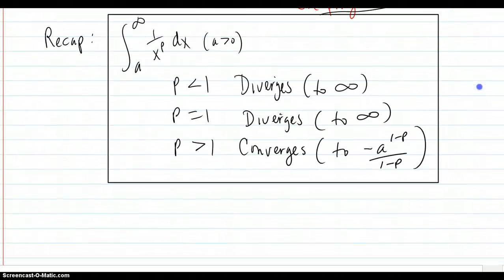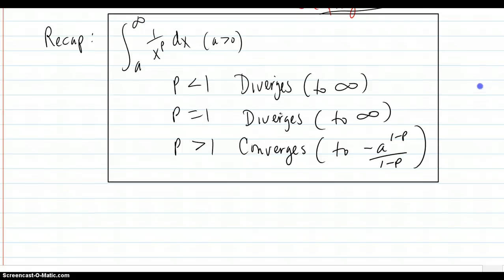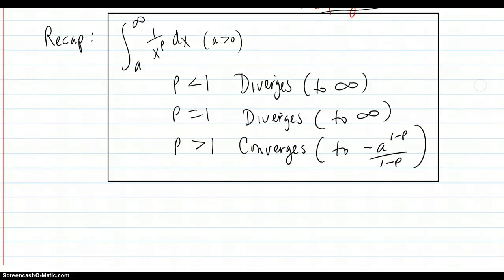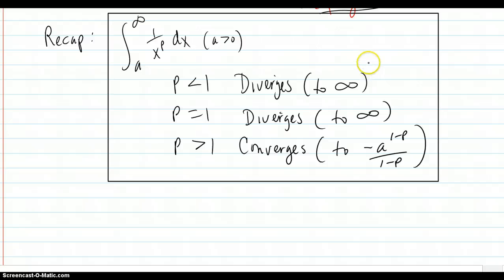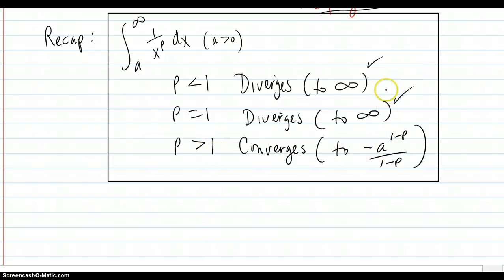Here's your recap. P less than 1: the integral diverges to infinity. P equal to 1: it also diverges to infinity. P greater than 1: the integral converges, and it converges to the value negative a to the 1 minus p over 1 minus p.